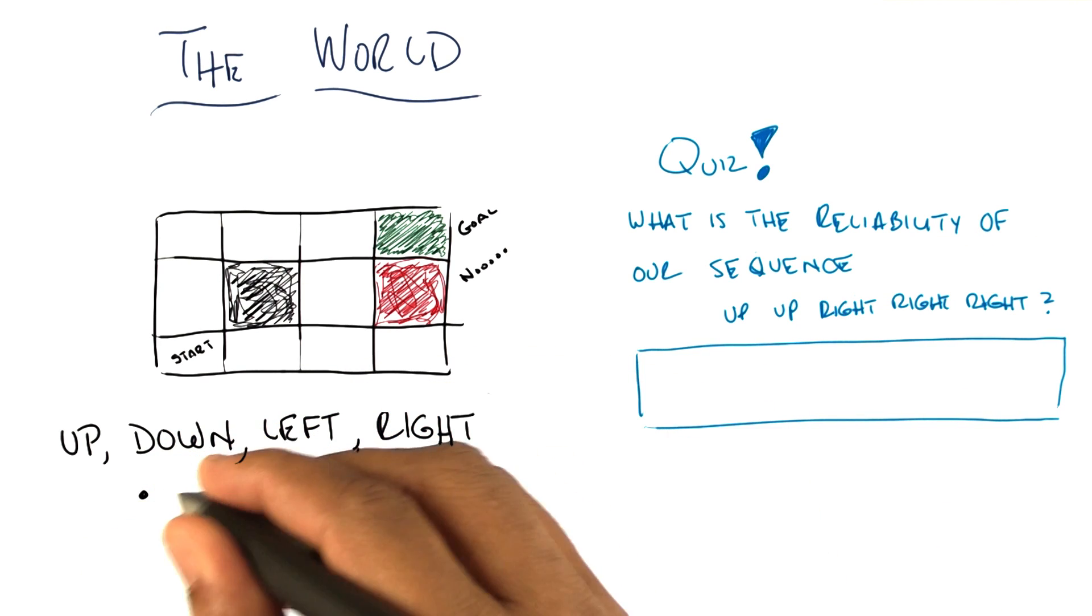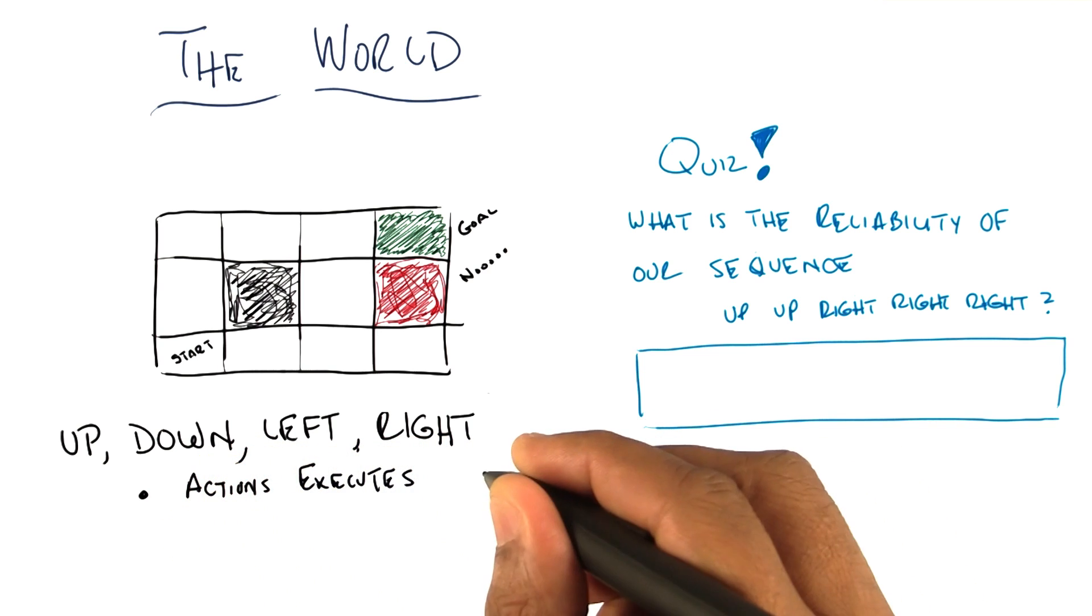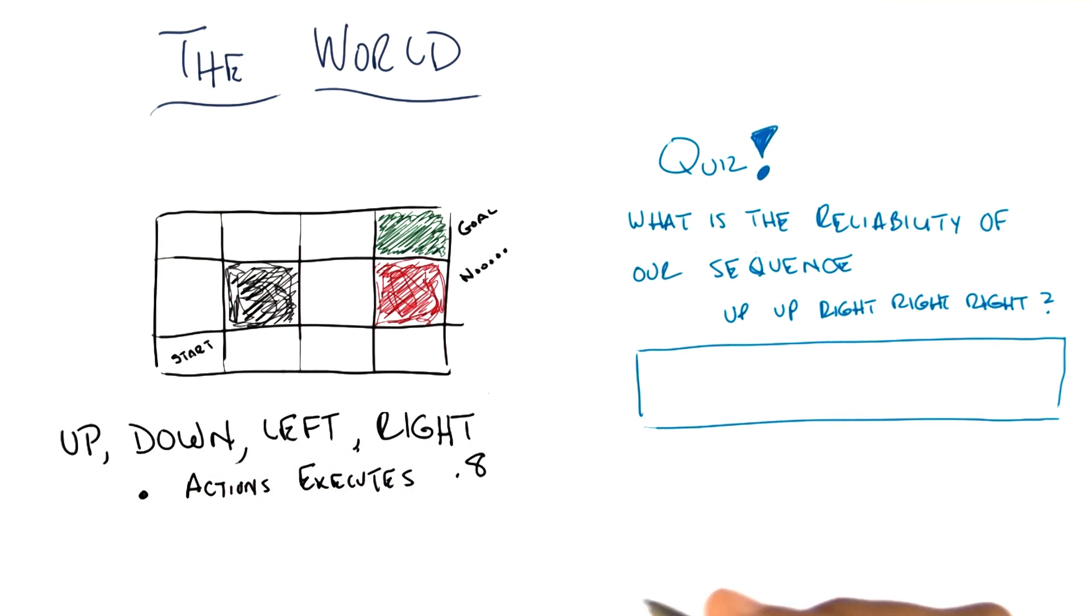When you execute an action, it executes correctly with probability of 0.8. So 80% of the time, if you go up, it goes up, assuming you can go up. If you say down, it goes down, assuming you can. Left, it goes left. Right, it goes right. Got it? Yeah.